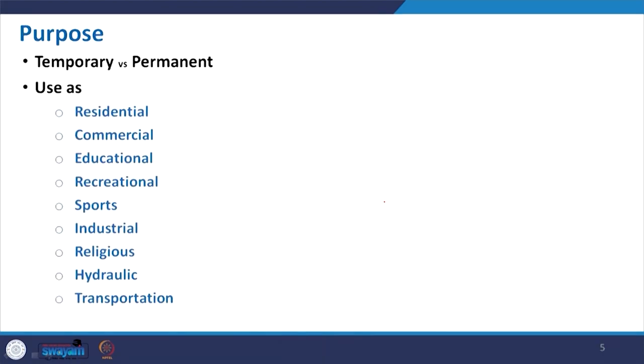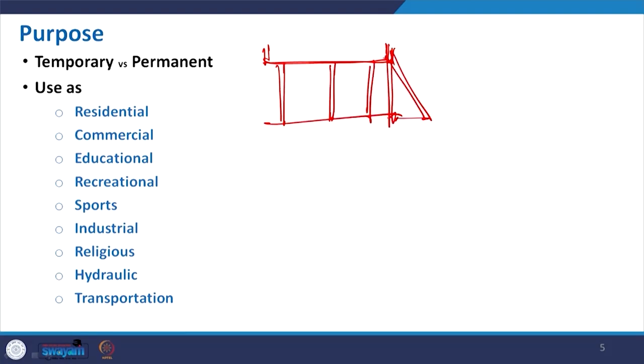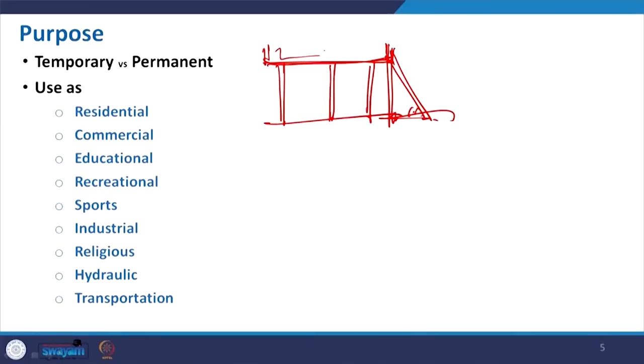Moving to purpose: the purpose of making a structure — it may be a temporary one or a permanent one. A temporary structure is basically what we refer to as formwork, whenever we construct any building. In order to support the concrete when it is poured, we use a temporary structure — the shuttering — supported with props and sometimes racking to give initial support and strength. The purpose is to make it temporary; after the concrete has set, we will remove this structure.